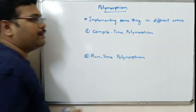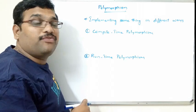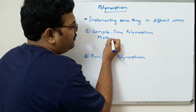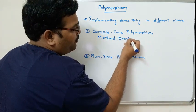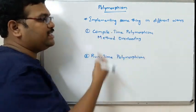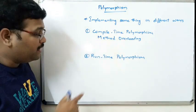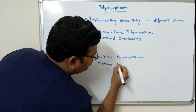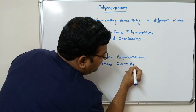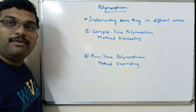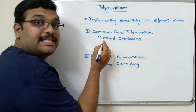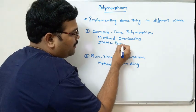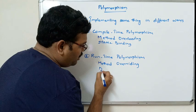Compile-time polymorphism is achieved by implementing method overloading, and runtime polymorphism is achieved by implementing method overriding. Compile-time polymorphism is called static binding, and runtime polymorphism is called dynamic binding.